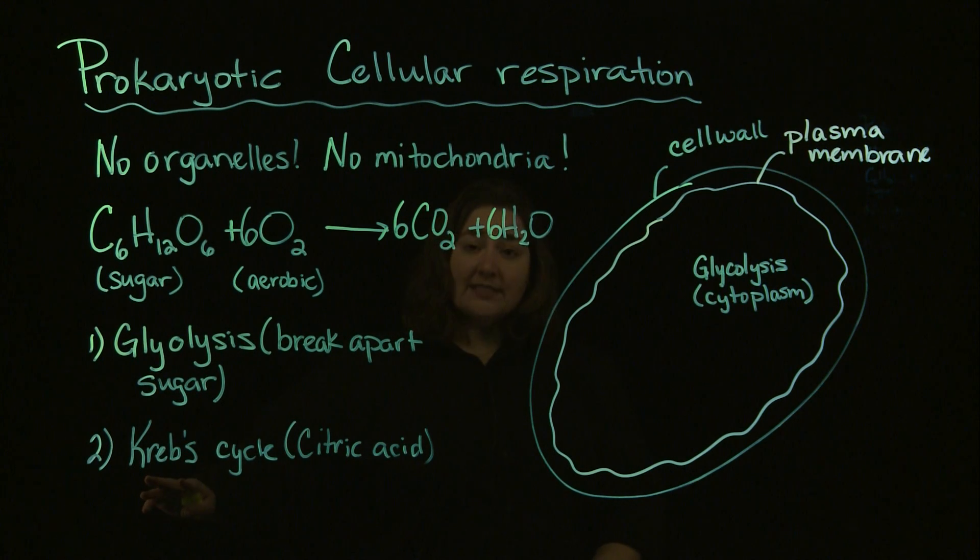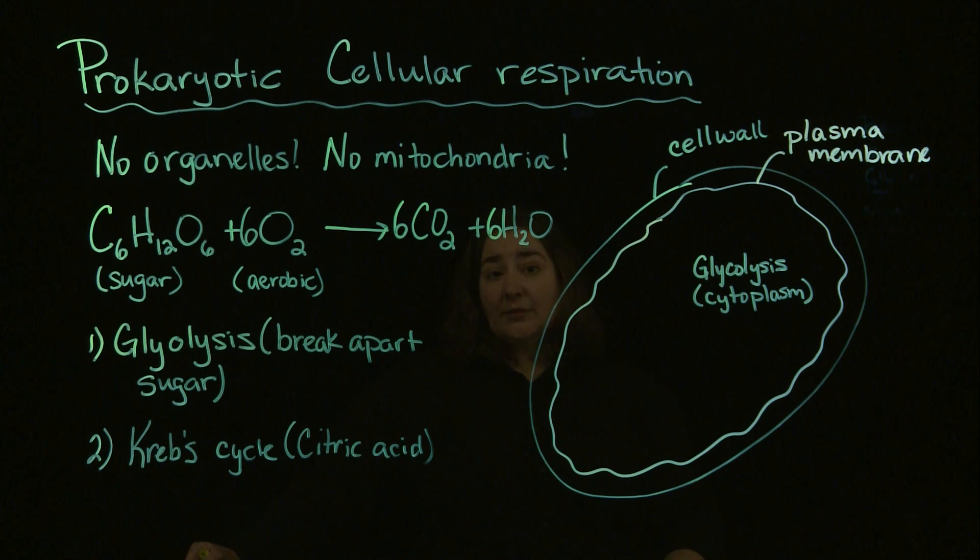Krebs refers to the scientist who actually described the process. So it's named after him. Citric acid is going to be one of the products that's produced as part of the citric acid cycle. So either one is correct. And we're going to talk in a little bit more detail about glycolysis and Krebs cycle in a bit. But our Krebs cycle is going to also occur within the cytoplasm of our bacteria.